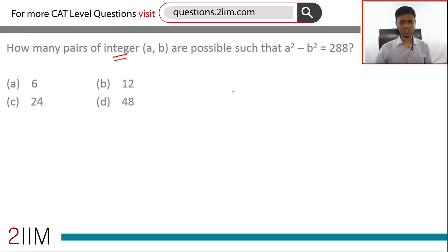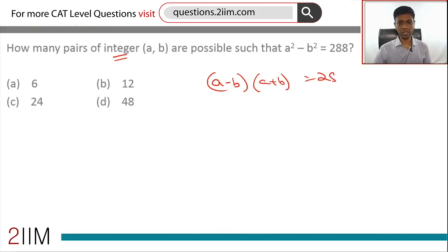Let's get to the question. a² minus b² is 288, which factors as (a minus b)(a plus b) equals 288.